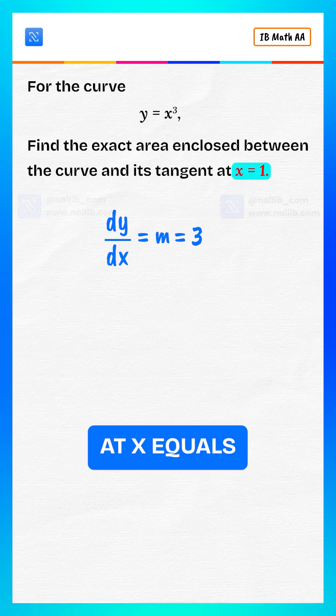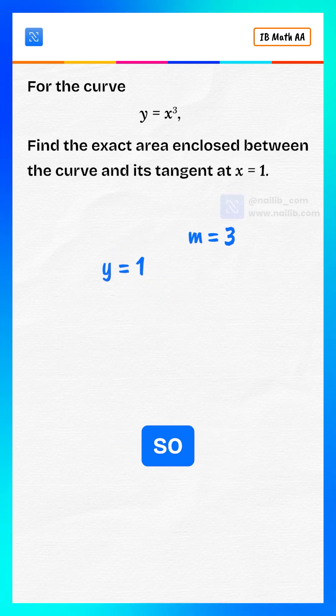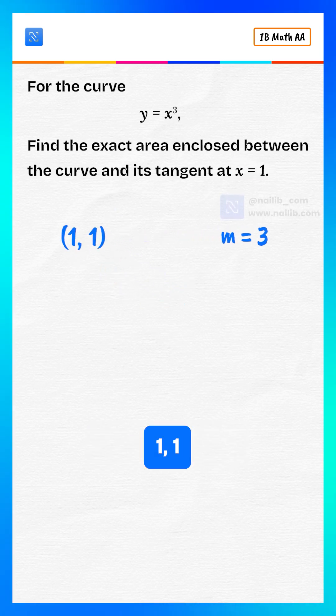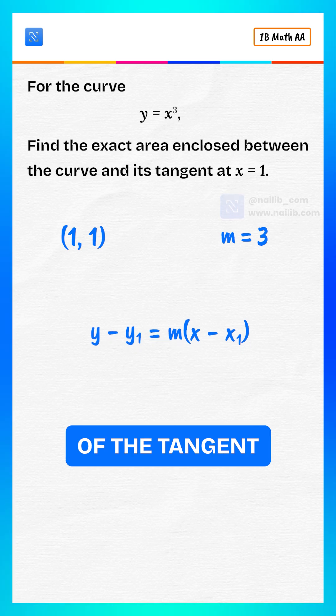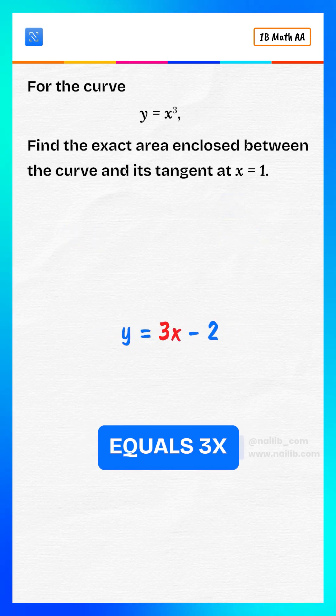Point on the curve at x equals 1 is y equals 1 cube equals 1. So the point is 1, 1. Use equation of the tangent. Substitute the given values. Simplify. y equals 3x minus 2.